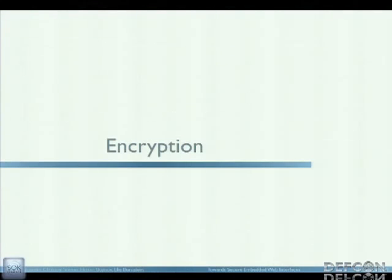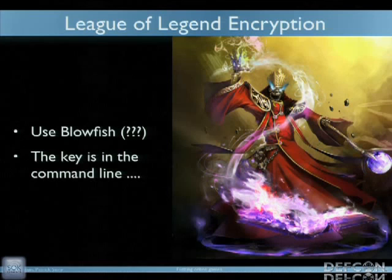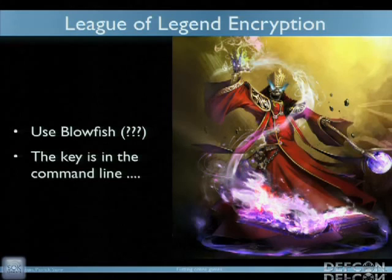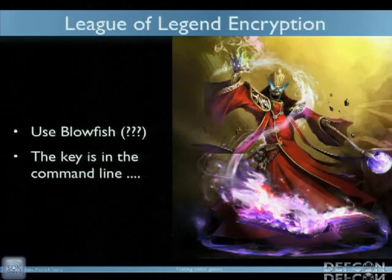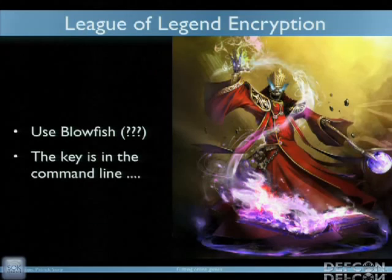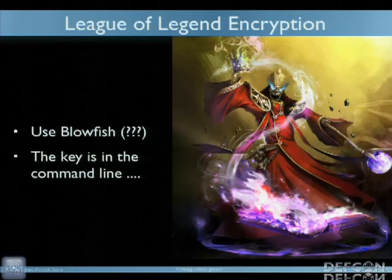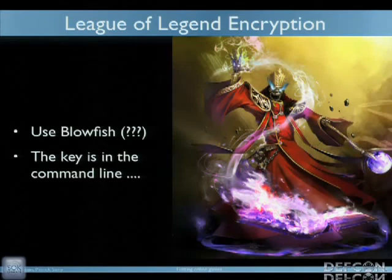Encryption — let's start with the easy one: League of Legends. League of Legends uses Blowfish. I have no idea why they chose Blowfish, which is slow, but someone must have read that it's great. League of Legends has two binaries: a launcher where you find your game and click play, and then the game itself. The interesting part is that when you click launch, the Blowfish key appears in the command line. So they have some sort of encryption — but not a big deal.